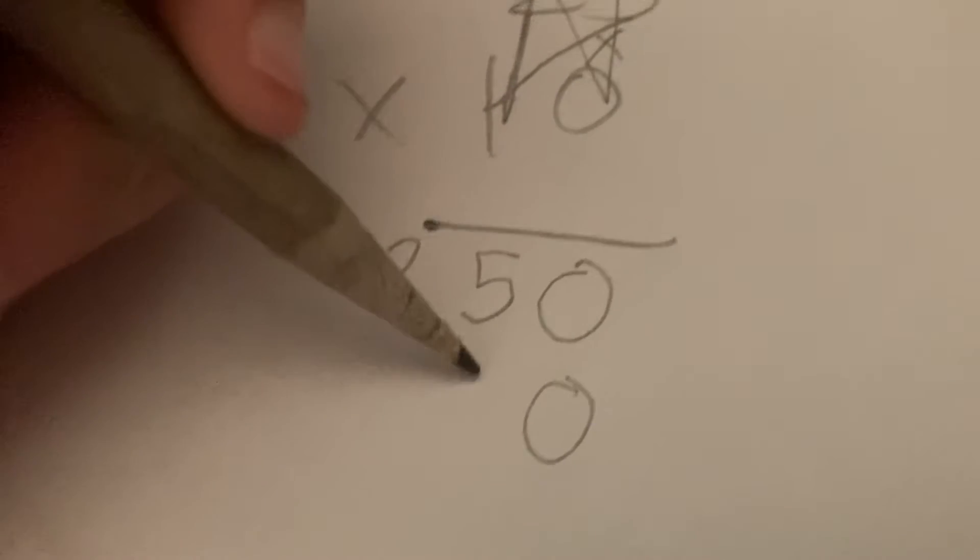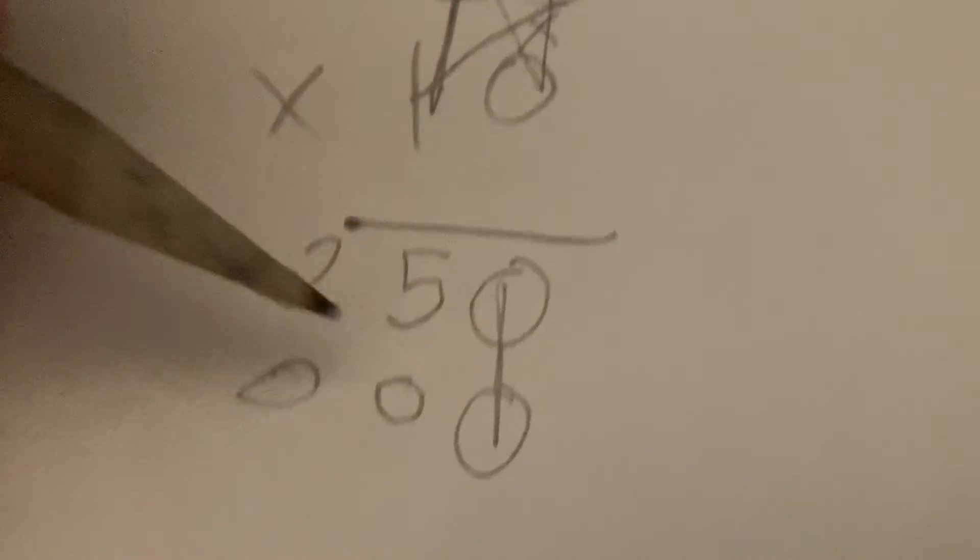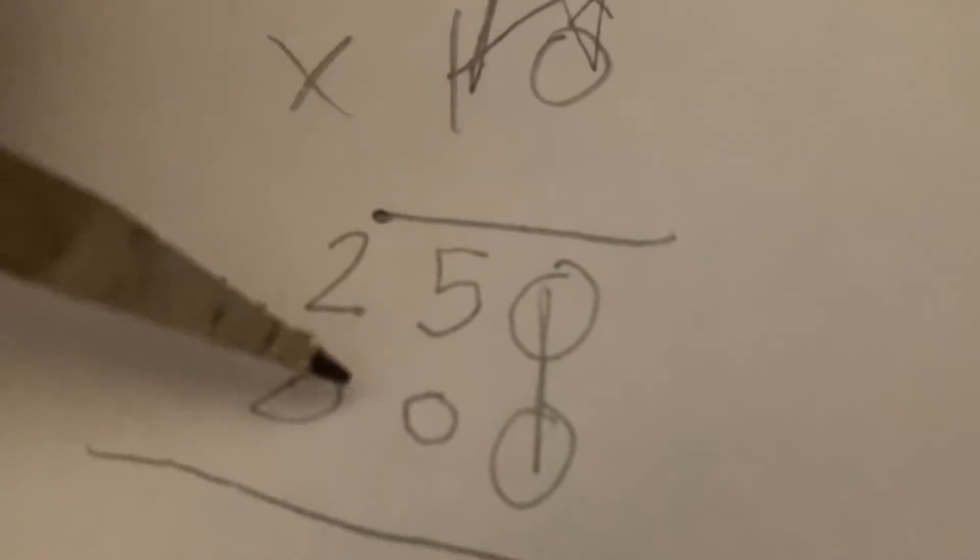Now, we can just write 0s right here. Starting from the right column, we're going to add these numbers, 250 and 3 0s.